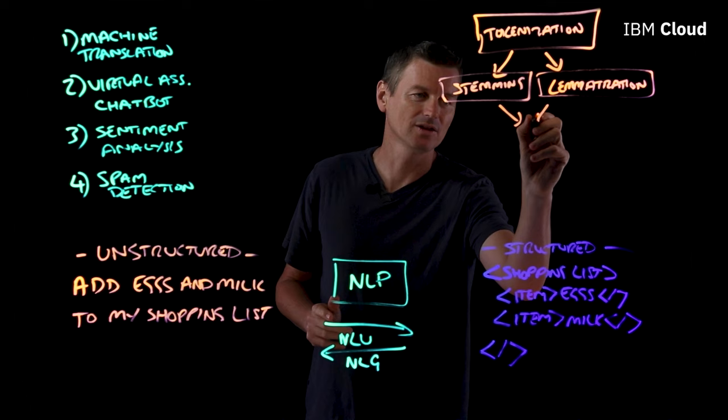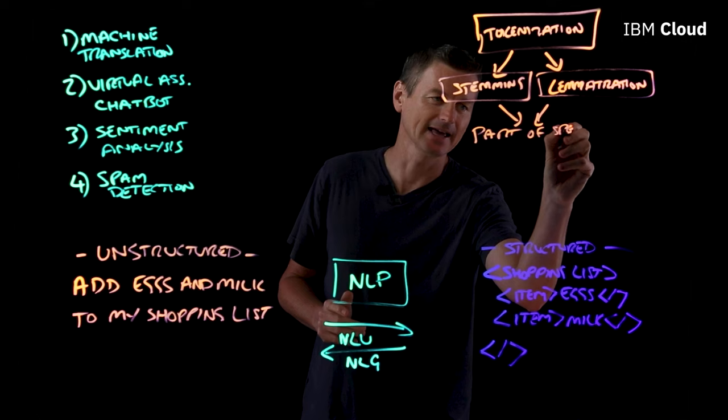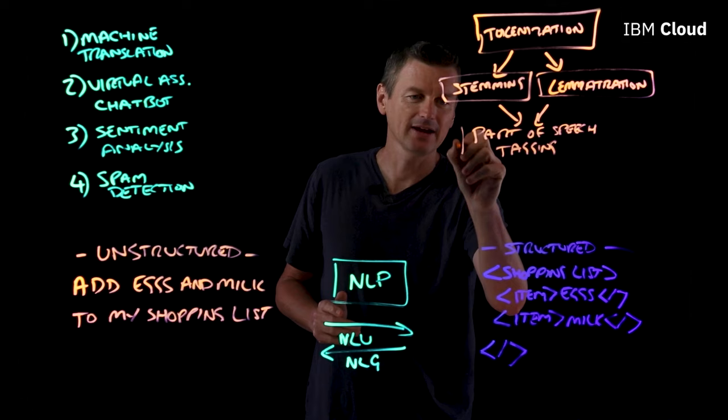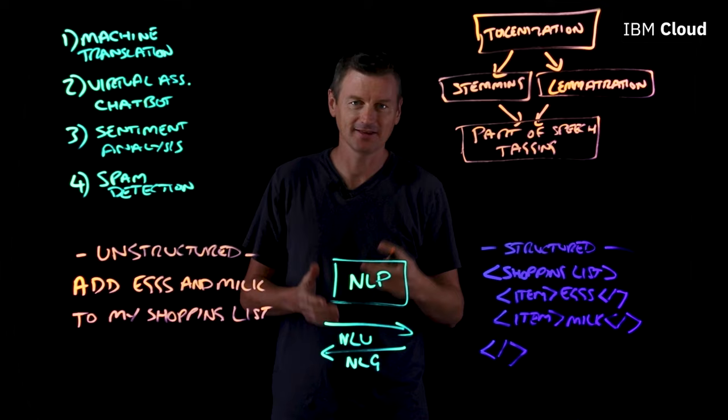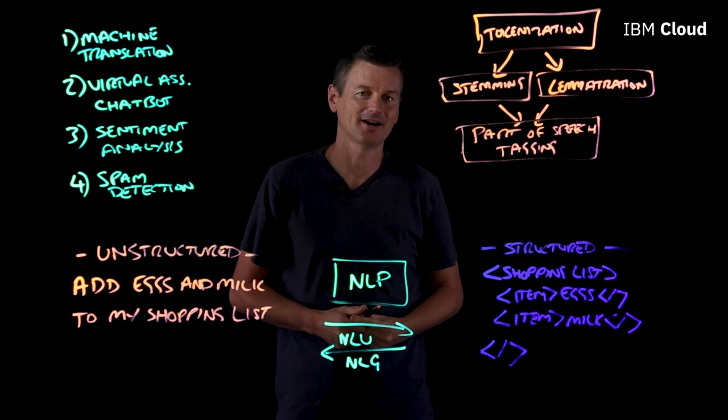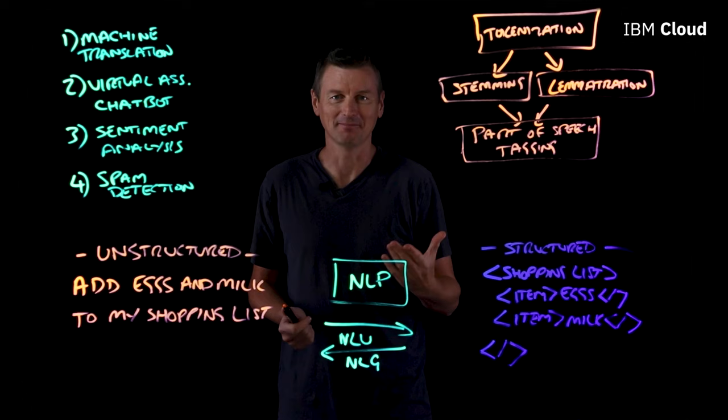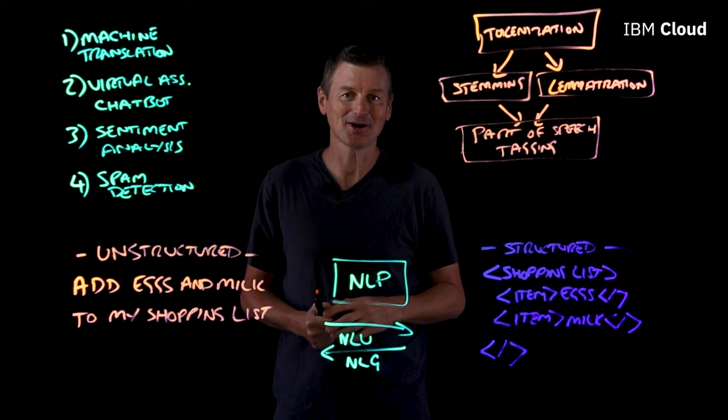Next, we can do a process called part of speech tagging. For a given token, this looks at where that token is used within the context of a sentence. Take the word "make" for example — if I say "I'm going to make dinner," make is a verb. But if I ask "what make is your laptop?" make is now a noun. So where a token is used in a sentence matters, and part of speech tagging can help us derive that context.